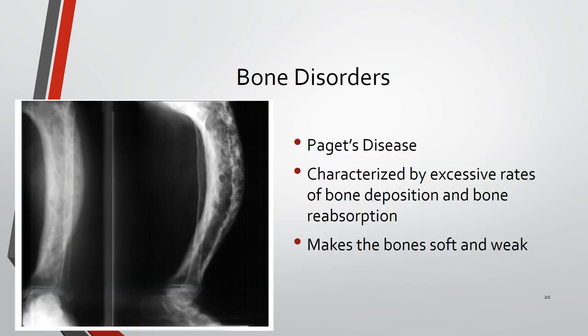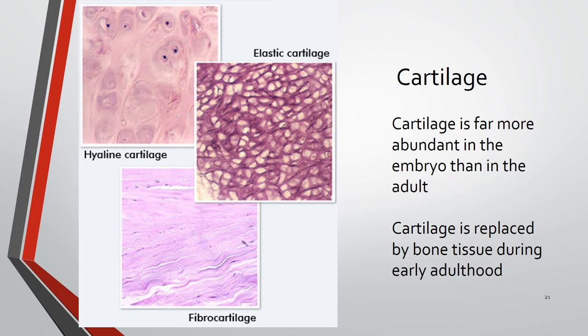Paget's disease is characterized by excessive rates of bone deposition and bone reabsorption. Because the bone is remodeled too quickly there is not enough stability, making the bones soft and weak. This can cause the bones to become bowed and potentially deformed.